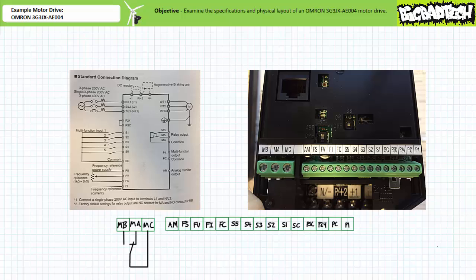Really, only the number of inputs and outputs has changed between the generic block diagram and the specific drive. That, and everything is pretty much multi-function rather than being fixed. Really, the only fixed-function inputs that aren't user-customizable are those reserved in the frequency reference group.